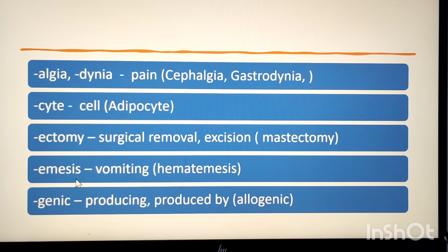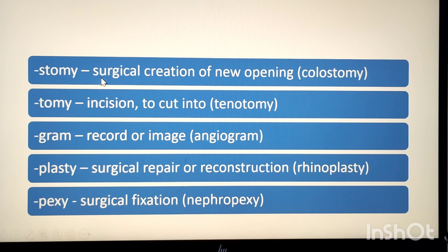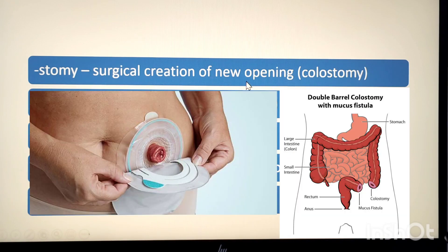The next suffix is -emesis, which means vomiting. Example: hematemesis. Hemat means blood, emesis means vomiting, so hematemesis means vomiting of blood. The suffix -genic means producing or produced by. The suffix -ostomy means surgical creation of a new opening. Example: colostomy, which means surgical creation of a new opening in the colon.